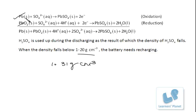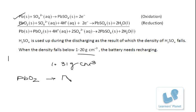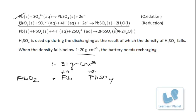During discharging: the lead at the anode combines with sulfate ions forming lead sulfate, giving out two electrons. These electrons are accepted at the cathode, where lead oxide combines with sulfate ions and hydrogen ions, taking up two electrons and forming lead sulfate. The oxidation state of lead in PbO₂ is +4, whereas in lead sulfate it is +2, so it takes up two electrons.